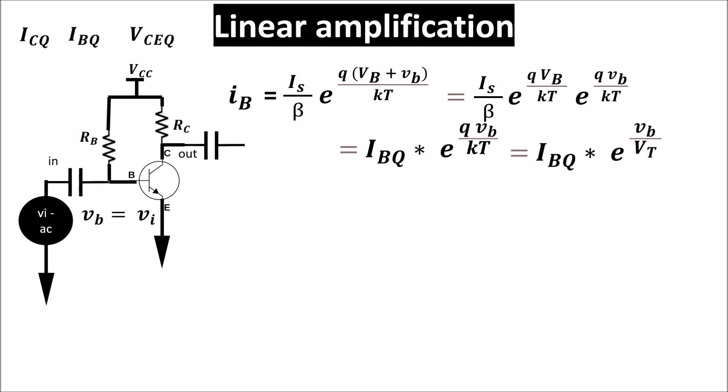We see that the relation between the new base current and the signal applied is not linear. But if we remember the Taylor series of an exponential, we can write this, and if VB is much less than VT we can approximate keeping only the first term of the equation because the others are too little.